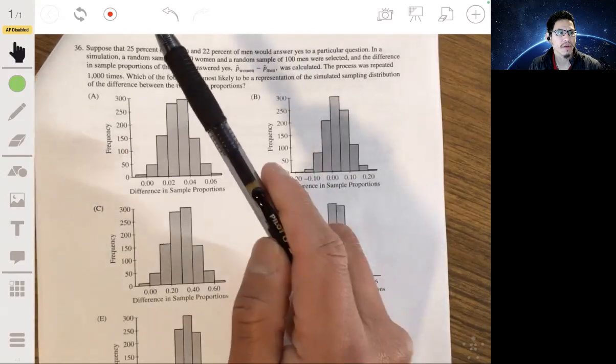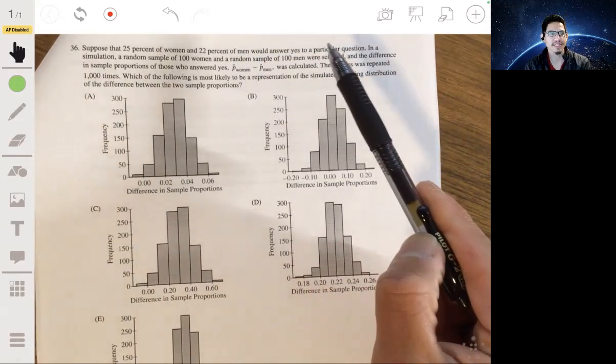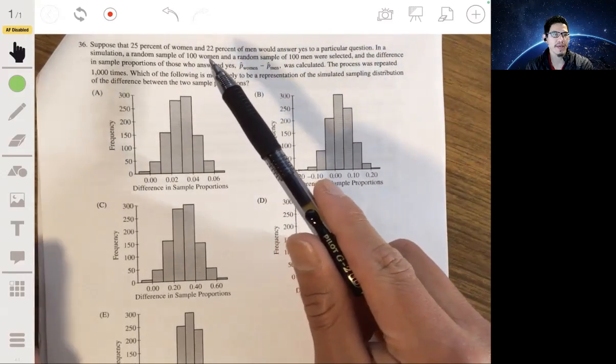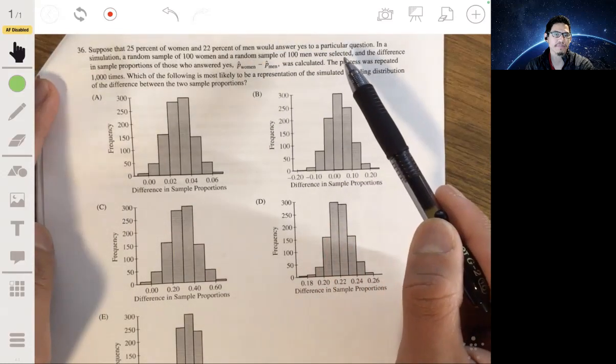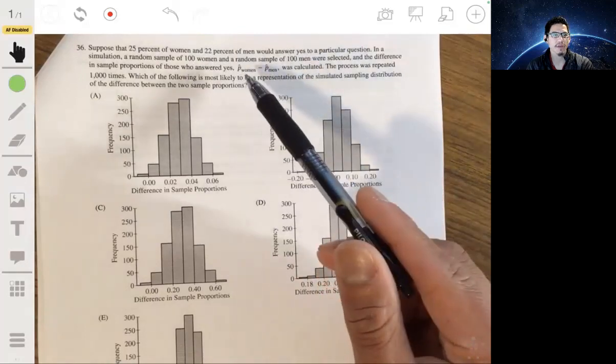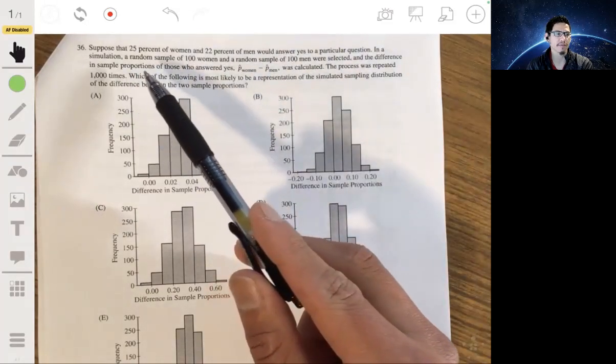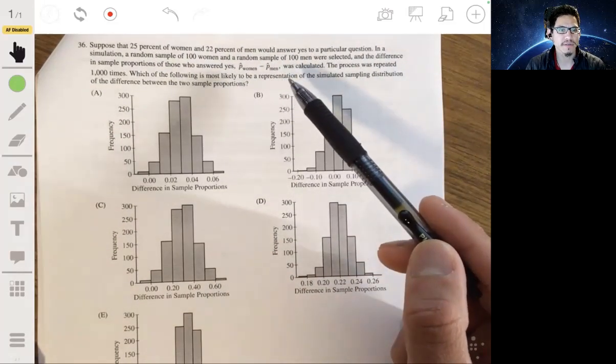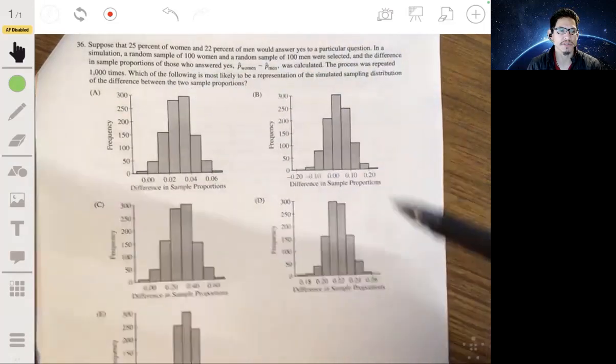Problem 36. We have that, let's suppose that 25% of women and 22% of men would answer yes to a particular question. In a simulation, a random sample of 100 women and a random sample of 100 men was selected. And the difference in sample proportions of those who answered yes was calculated. The process was repeated 1,000 times. Which of the following is most likely to be a representation of the simulated sampling distribution of the difference between the two sample proportions?